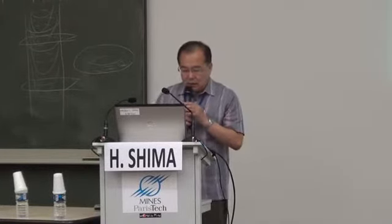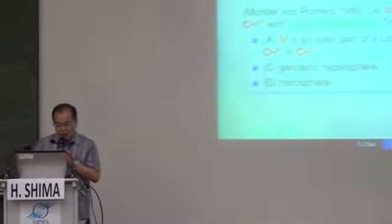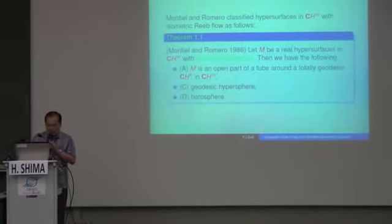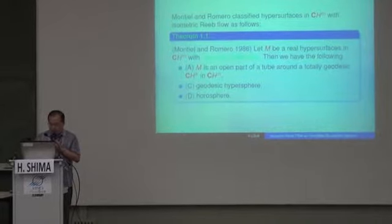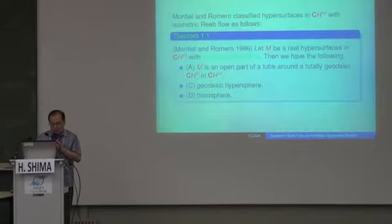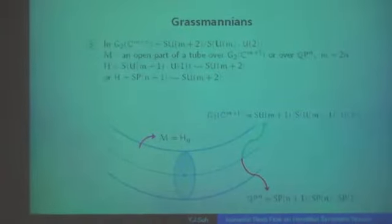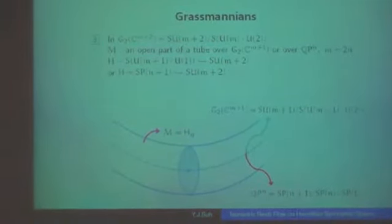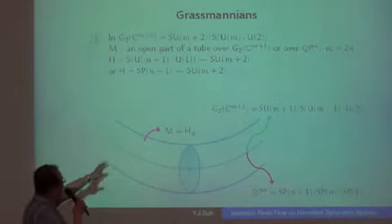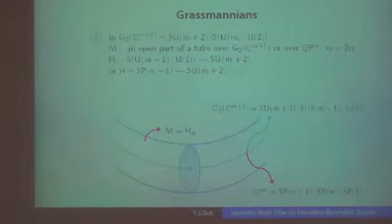After this, the result shows that all hypersurfaces are of a specific orbit type — they should be homogeneous. Now let us consider rank 2: in the compact complex two-plane Grassmannian, we have proved and classified this kind of hypersurfaces. There turn out to be two kinds of type.